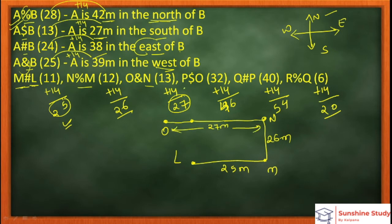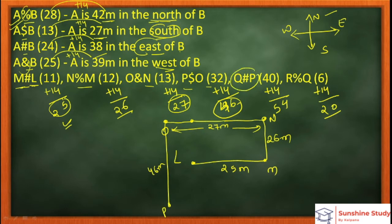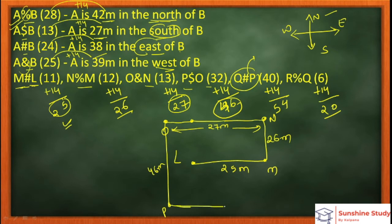Next: P dollar O. Dollar means South. P is South of O. O's South gives us P at a distance of 46 meters — noted as 46 here. Next is Q: Q is East of B, meaning Q is East of P. So P's East brings Q in at a distance of 54 meters.